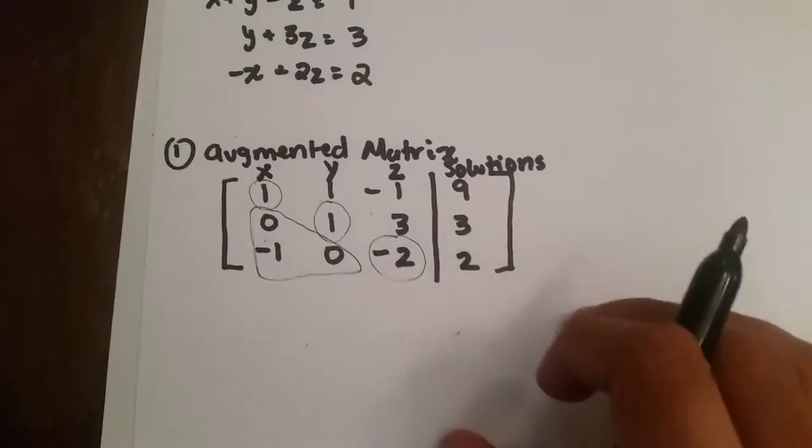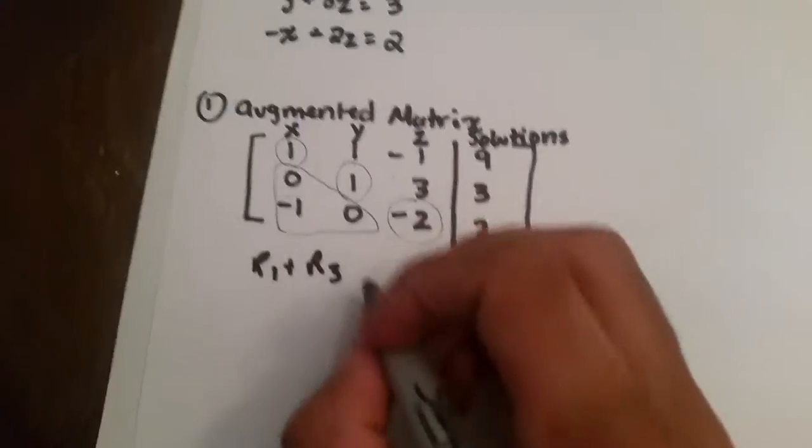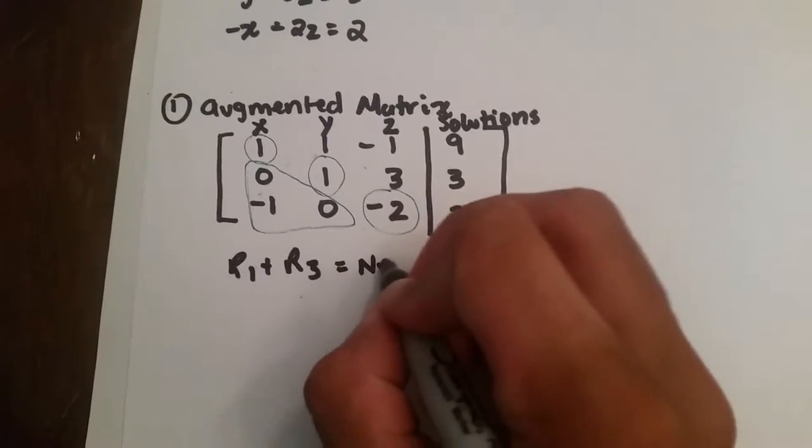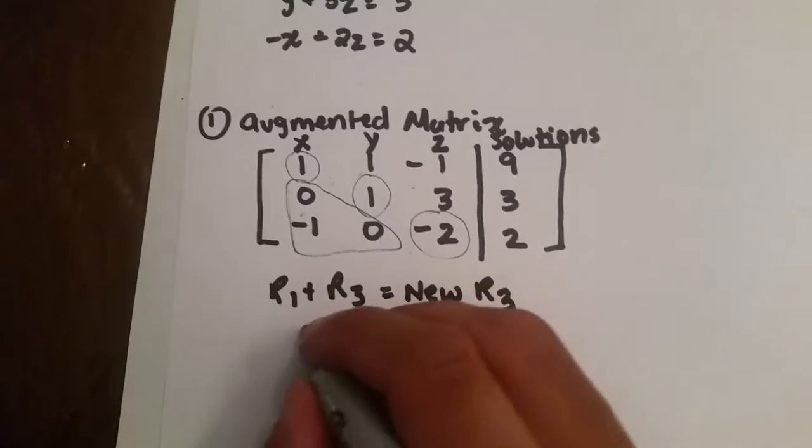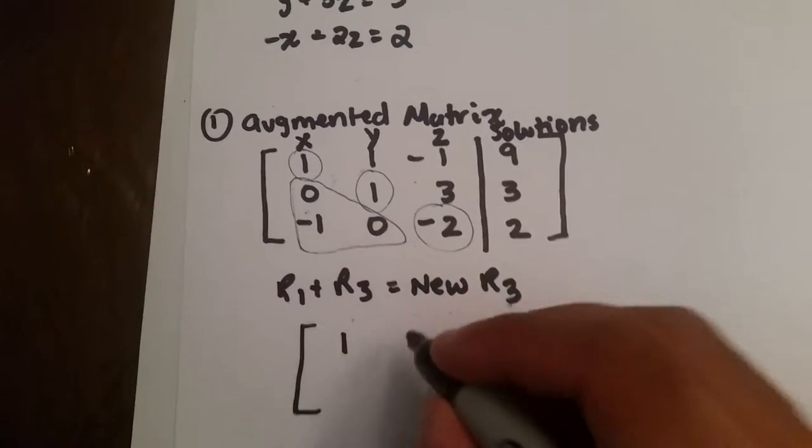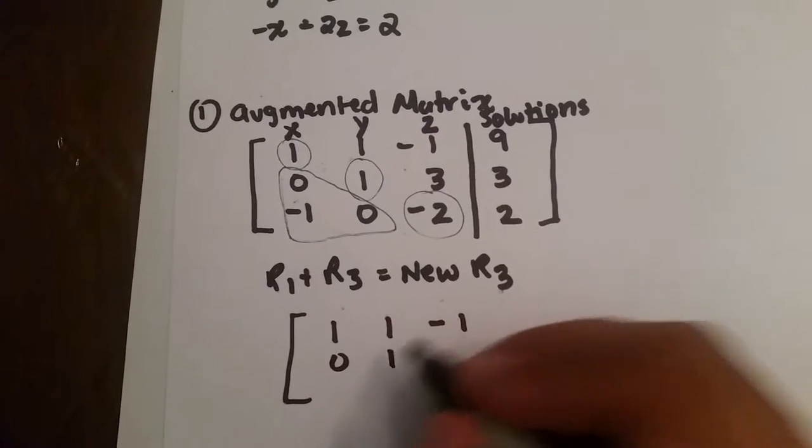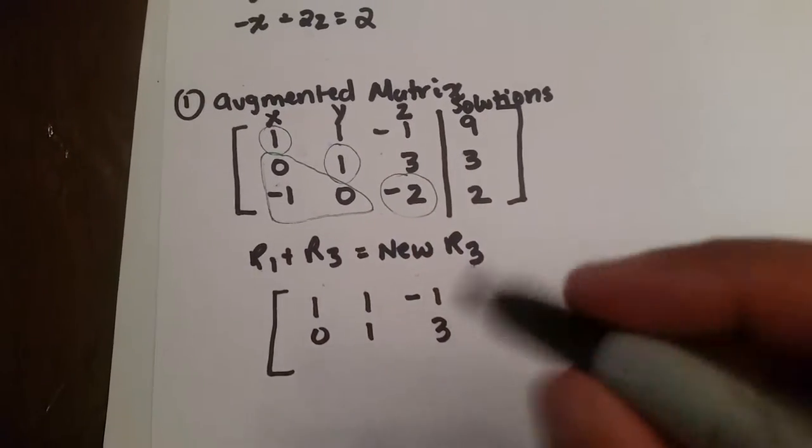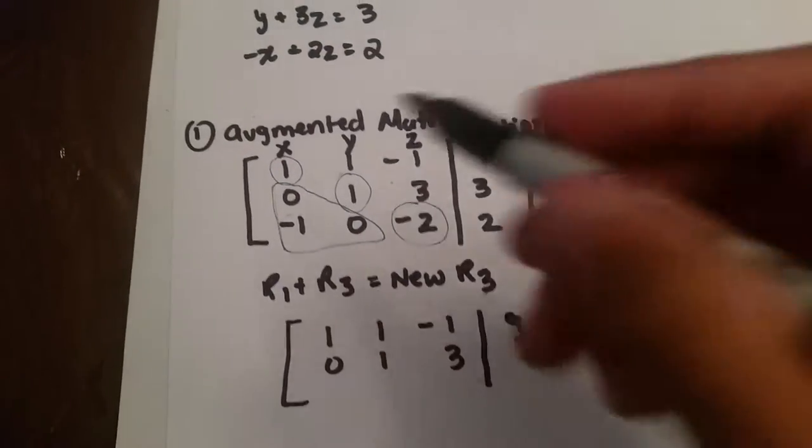So, what I'm going to do first is I'm going to do row 1 plus row 3, and that's going to be my new row 3. So, we know our row 1 does not change, and we know our row 2 does not change, and our row 3 does, because you're making a new row 3.